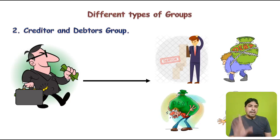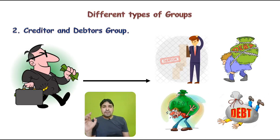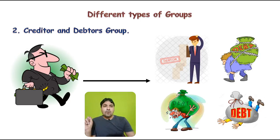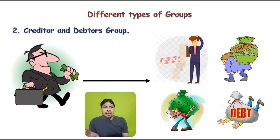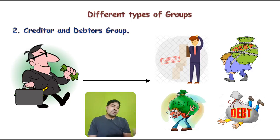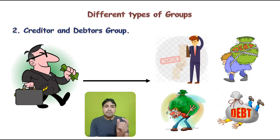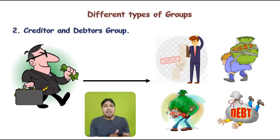The next type is the creditor and debtor group. For example, a bank gives loans to different persons — the bank becomes the creditor and the borrowers become debtors. The bank, to secure itself, can insure the group of debtors under a group insurance policy. A debtor remains a group member as long as the loan is not repaid. If the debtor dies while still a member, the creditor can claim the loss from the insurance company.